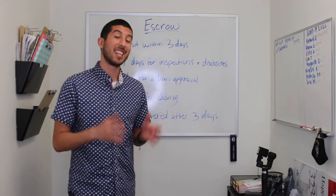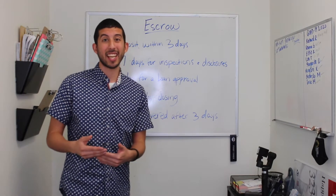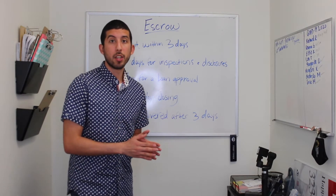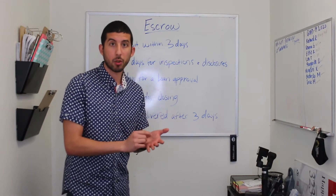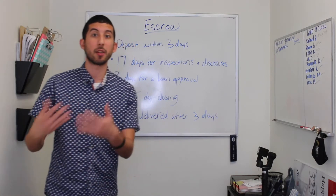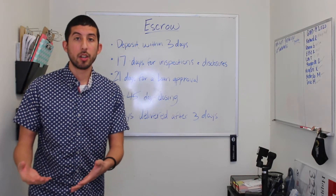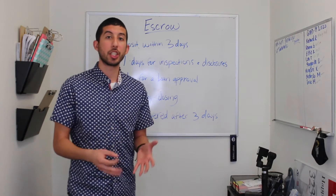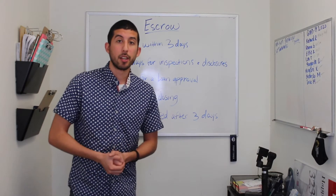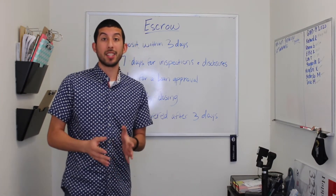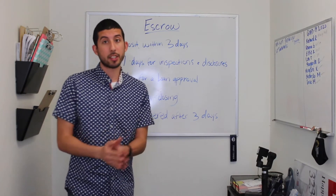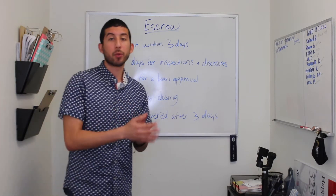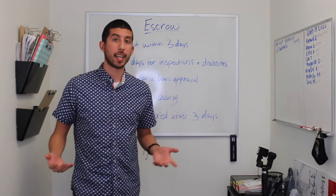The seller has seven days from the open of escrow to fill out the disclosures and send them to the buyer. The disclosure is disclosing the condition of the property, so the seller gives the disclosures to the buyer, and the buyer gives them back within those 17 days.